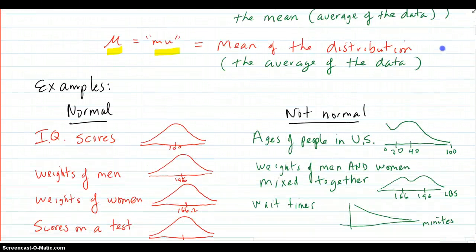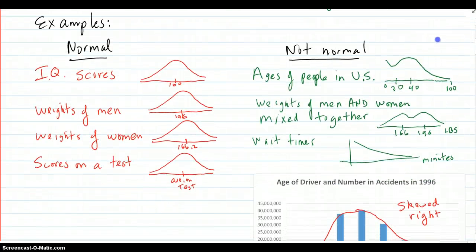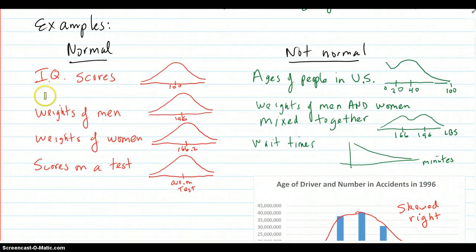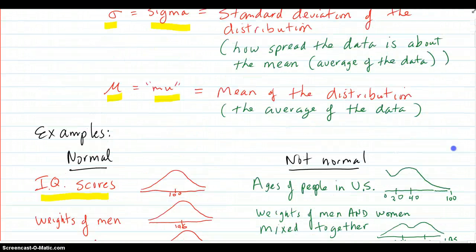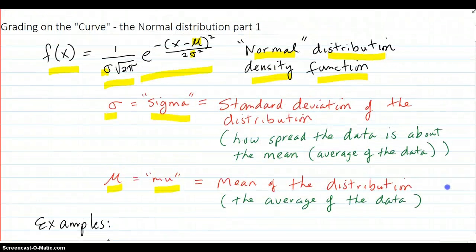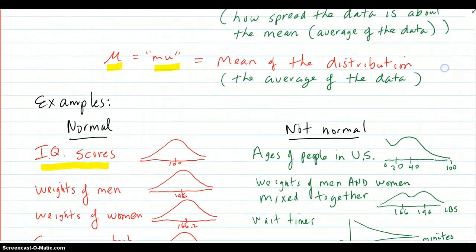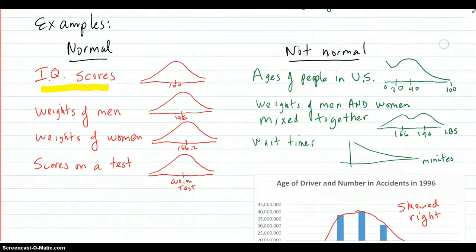Here are some examples of distributions that are normal and that are not normal. IQ scores, as we mentioned before, have that nice bell-shaped curve. But not only that, they're also normal. Not just any old bell-shaped curve is normal - it has to have this density function as shown here. IQ scores are normally distributed with a mean of 100 and have a nice bell-shaped curve.